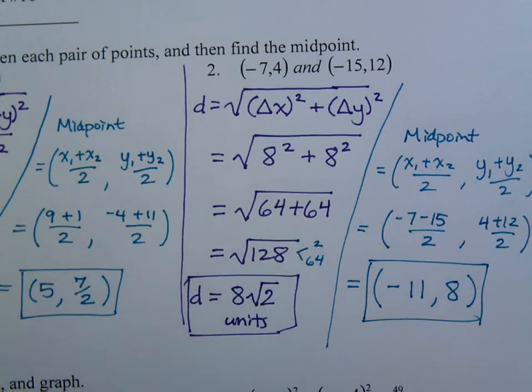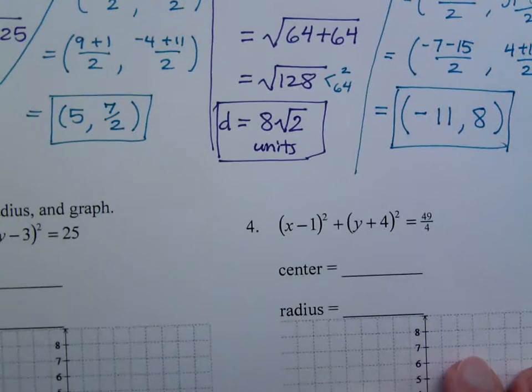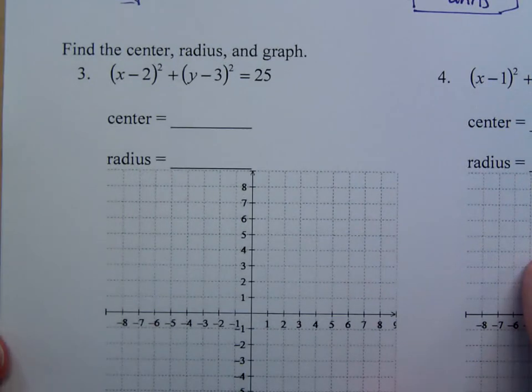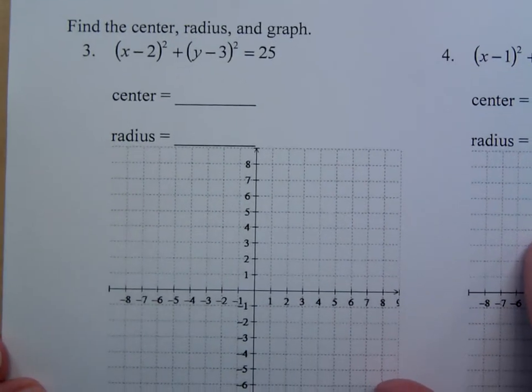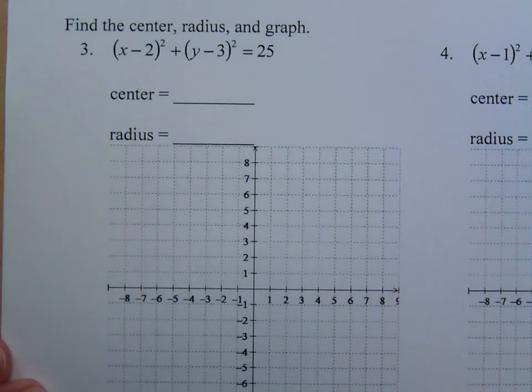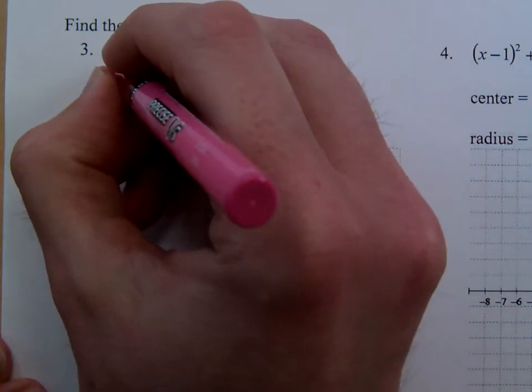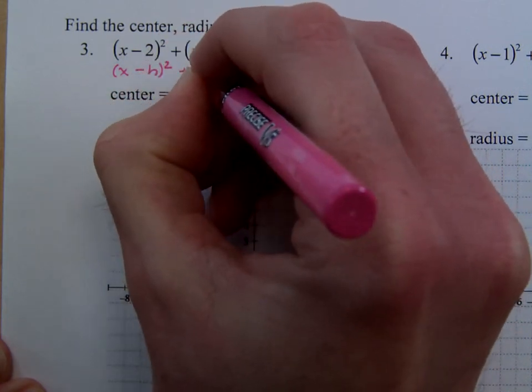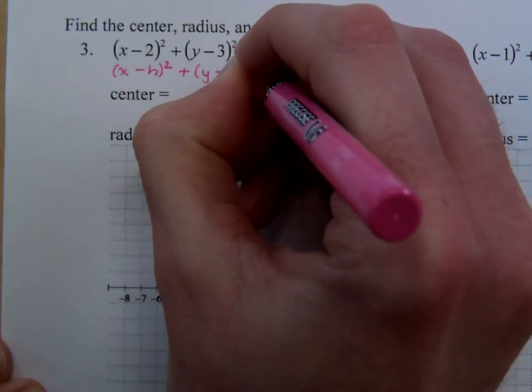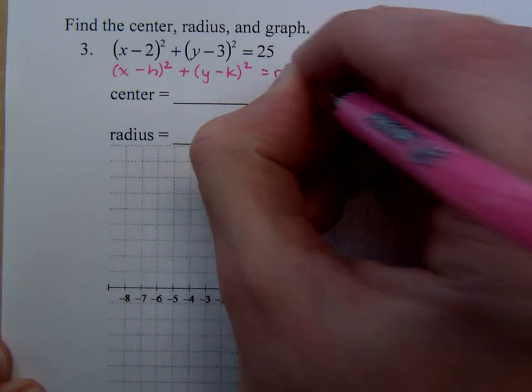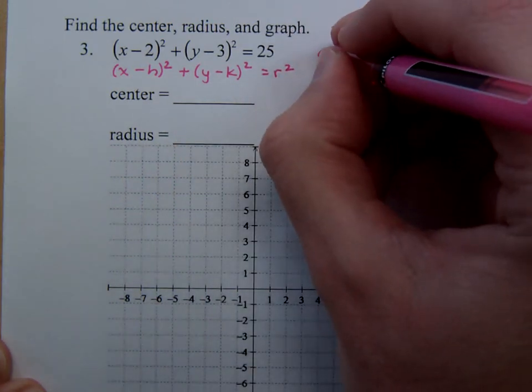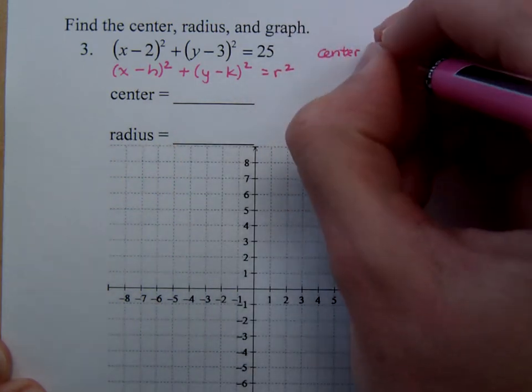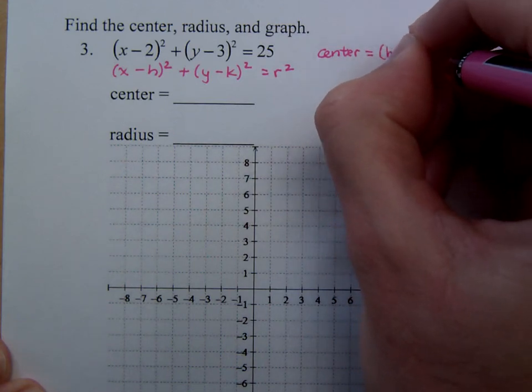Alright, so now we're going to move on to talking about circles. Now, the formula that we have for circles, what we're working with, x minus h squared plus y minus k squared equals r squared. And what we knew from this is that it gave you the center as being the coordinates h, k, and the radius is just r.